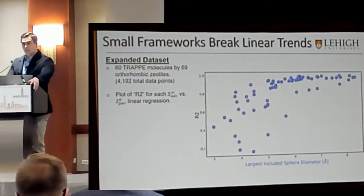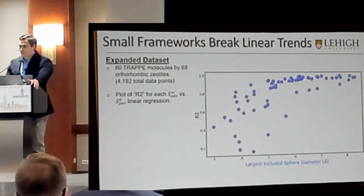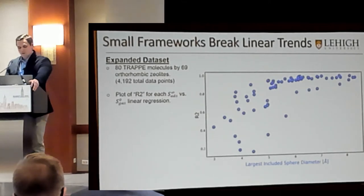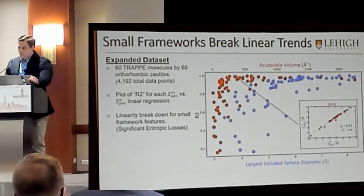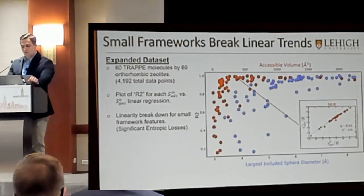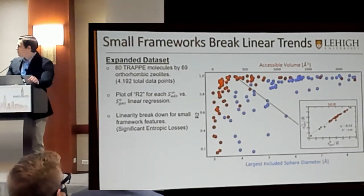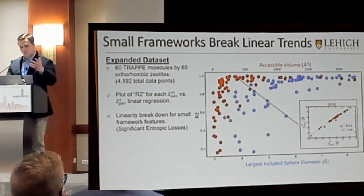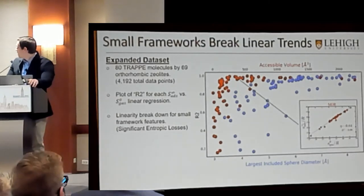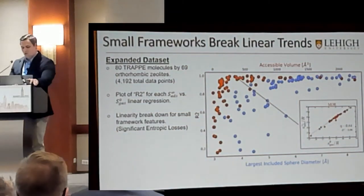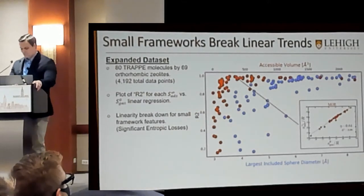Now I want to answer the question: where do these linear trends break down? We performed linear least squares regression for all of our 4,000-plus data points, constituting 69 different zeolites. What we found is that these trends break down under very large entropic losses — specifically, when the size of the zeolite shrinks, these linear trends can no longer be used. On the y-axis I have R-squared values of these linear fits, with a lower bound shown as a reference.